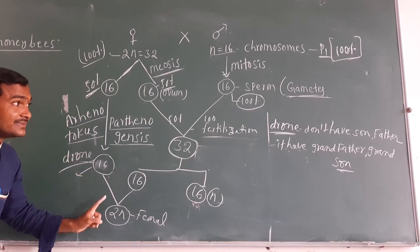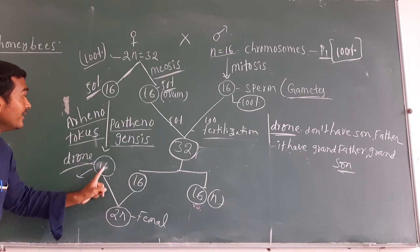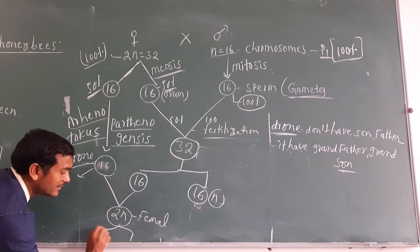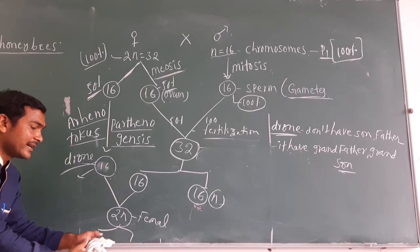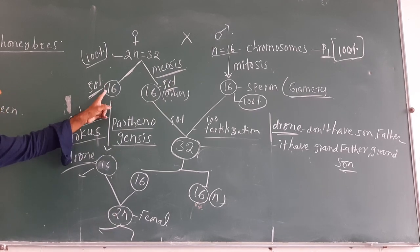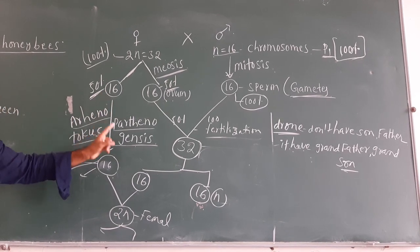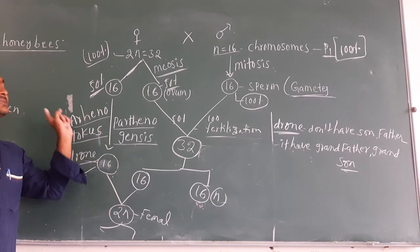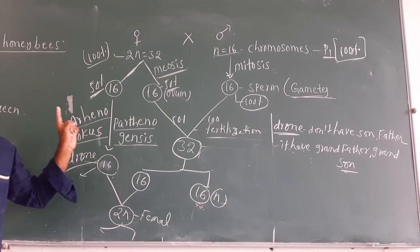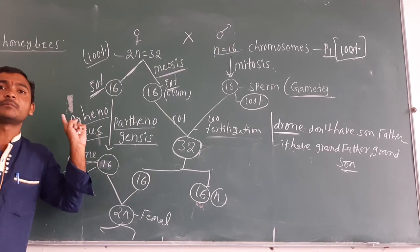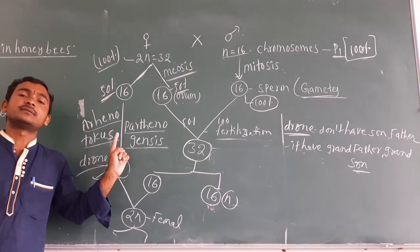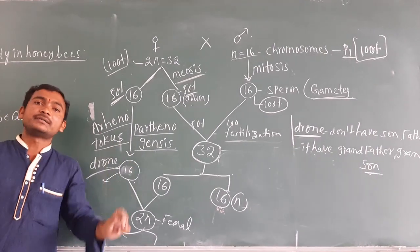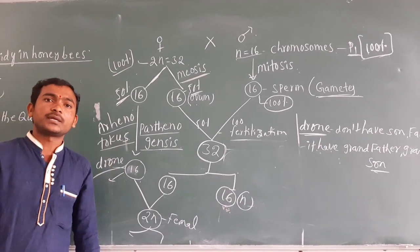However, the drone does have a grandfather and a grandson, observable in the third generation. This concludes the haplodiploidy type of sex determination in honeybees. If you have any doubts, please leave them in the comment section. Thank you.